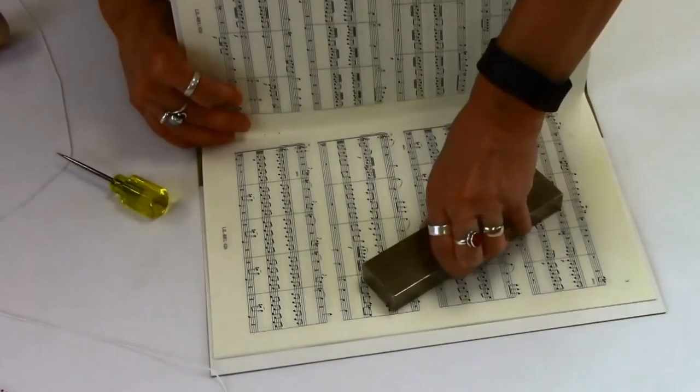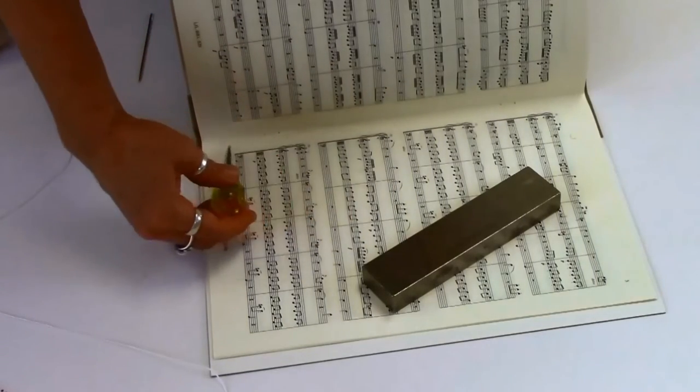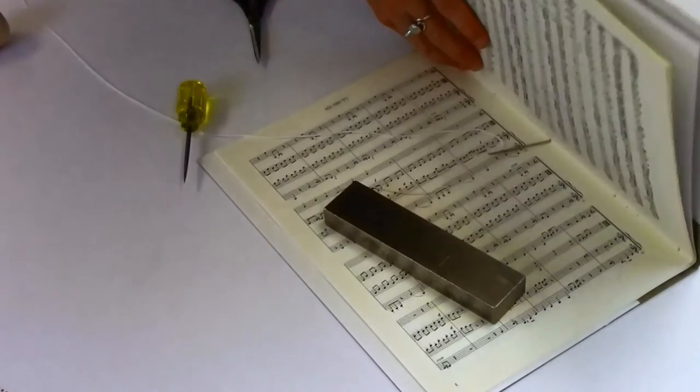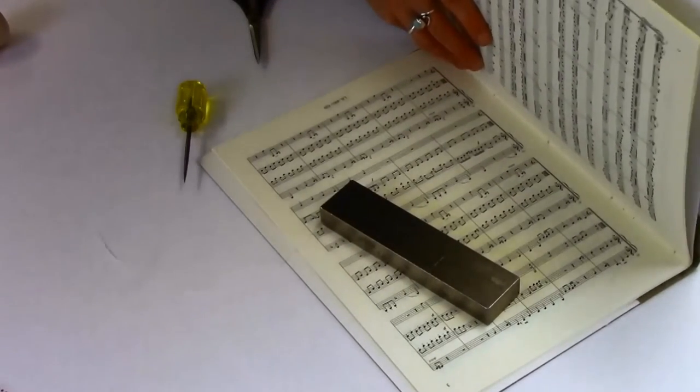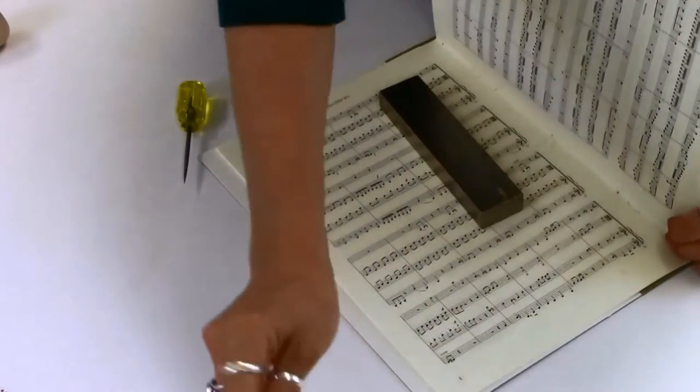Distribute the holes equally along the fold, with one in the middle and two on each side. Start sewing from the inside and follow as shown on the video. Finish the inside with a double knot.